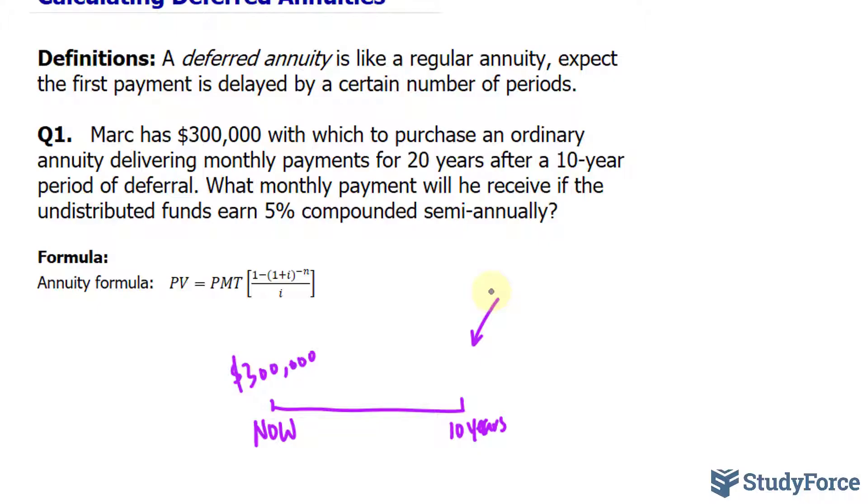We need to find out the future value of $300,000 10 years from now. The value that we find at 10 years, that amount will be broken into payments in which he will receive, according to the question, every month for the next 20 years. So, from 10 to 30 years from today, he'll be receiving monthly payments.